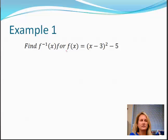Find the inverse of x for f of x equals x minus 3 squared minus 5. So the first thing we need to do is we need to switch our x and y. So we have x equals y minus 3 squared minus 5.